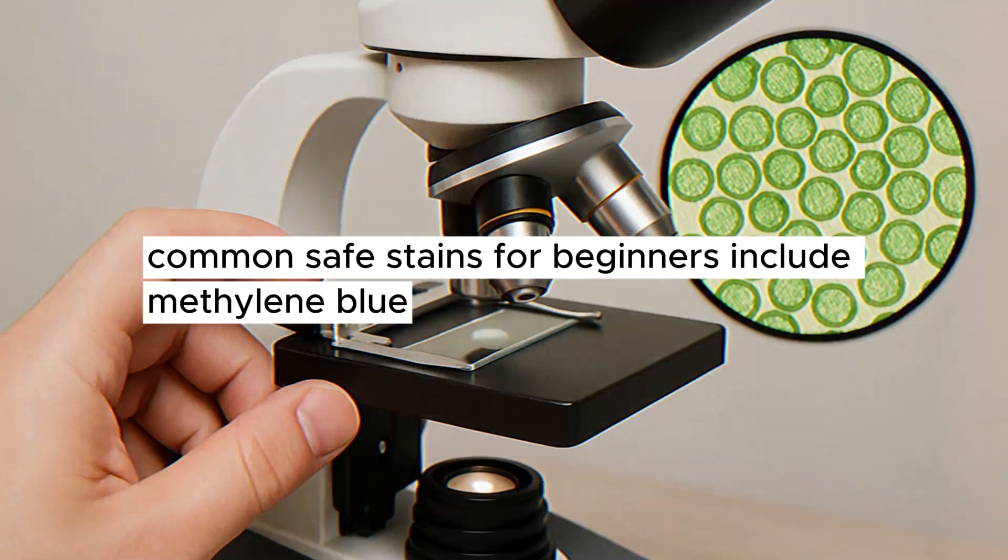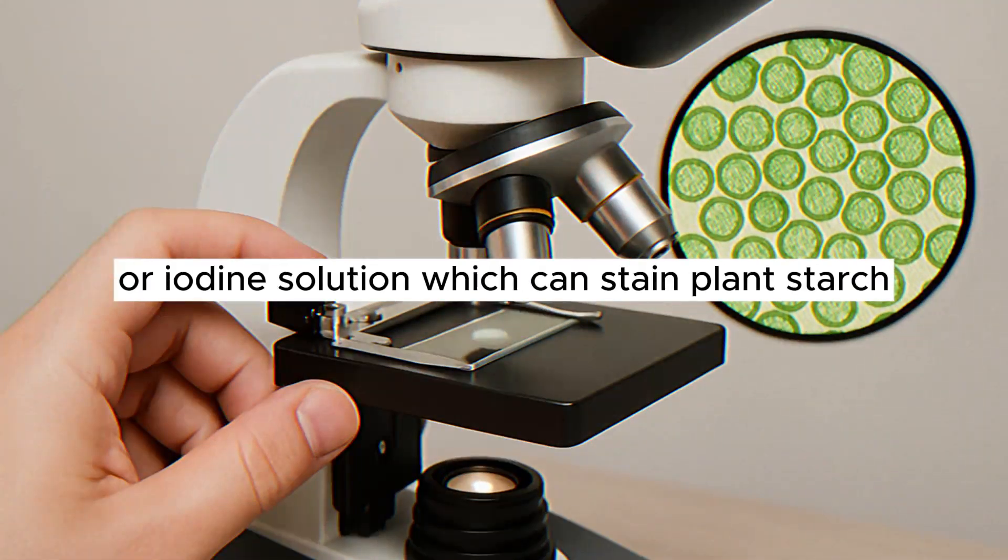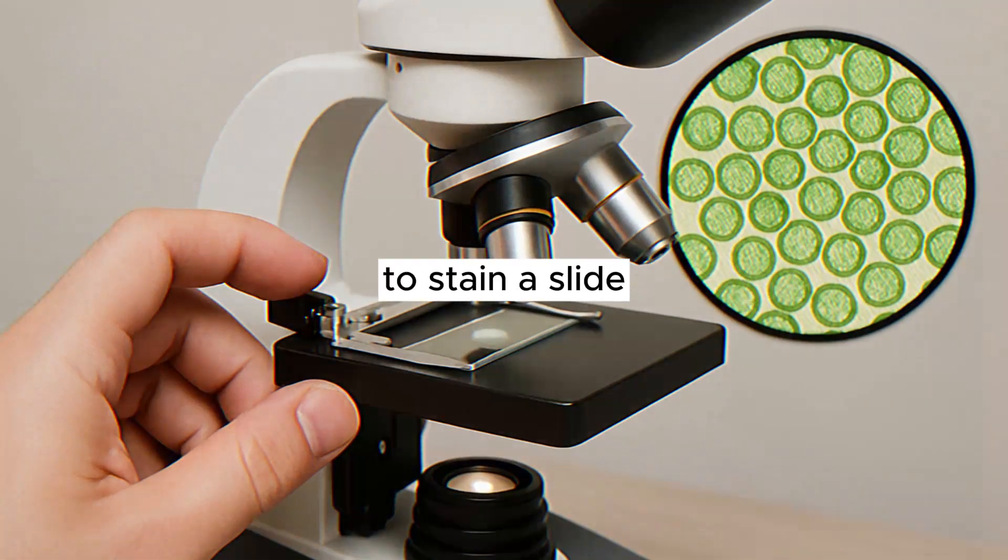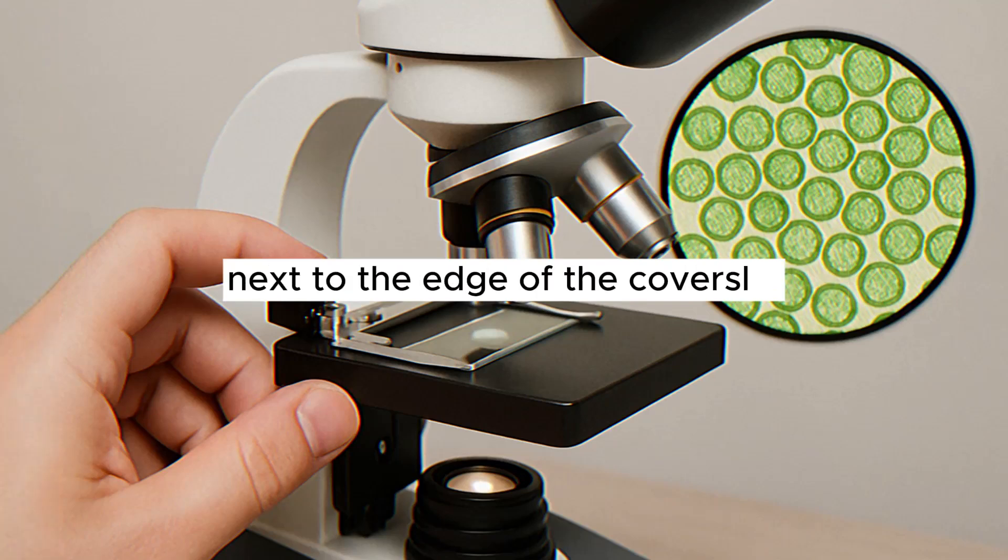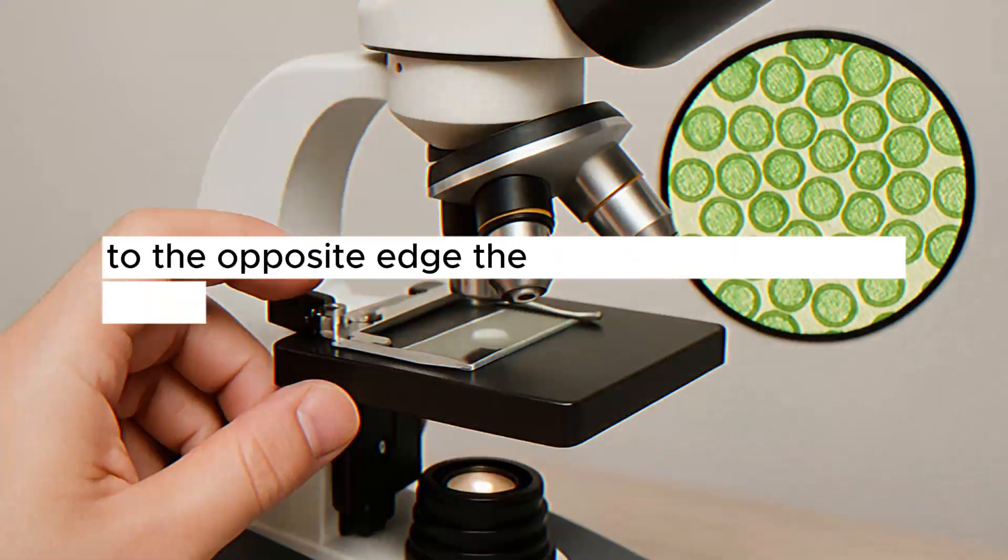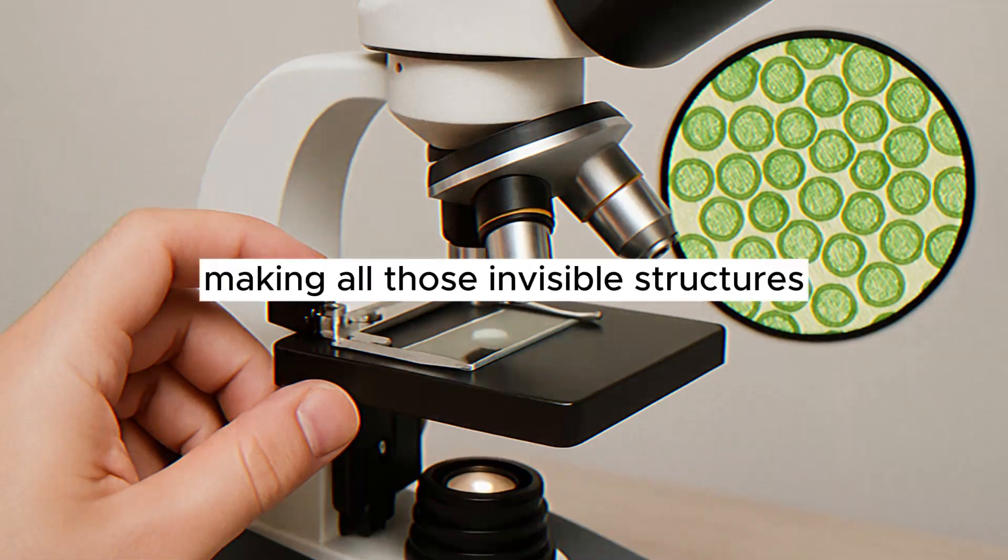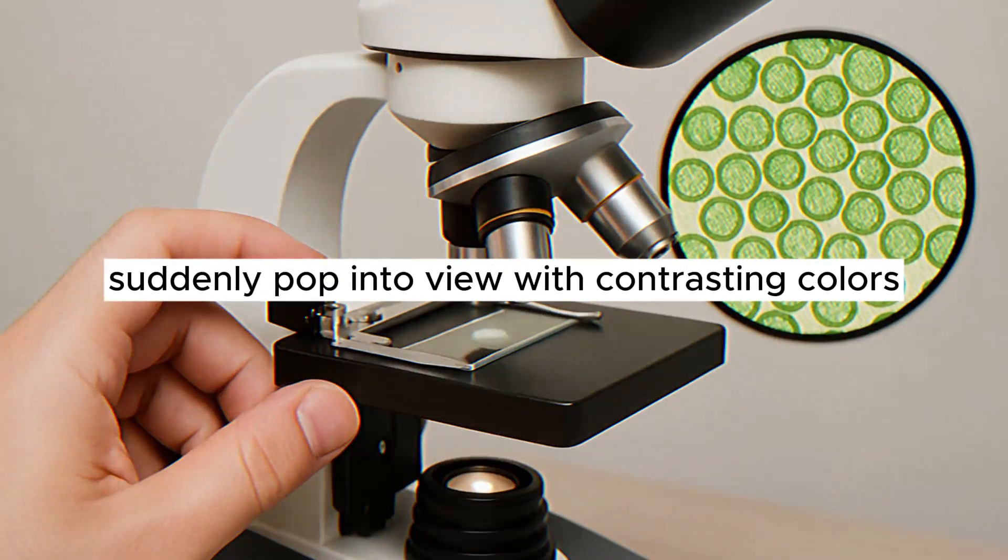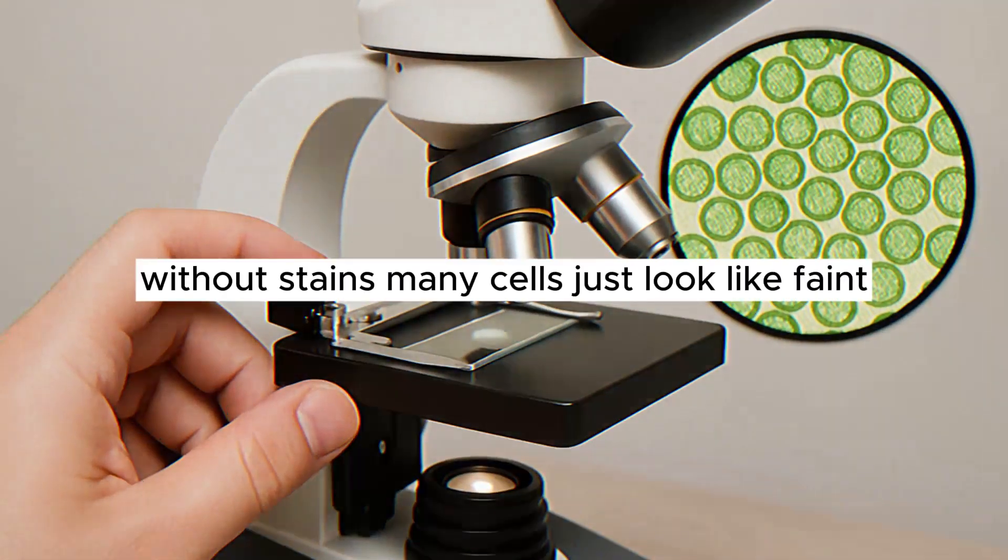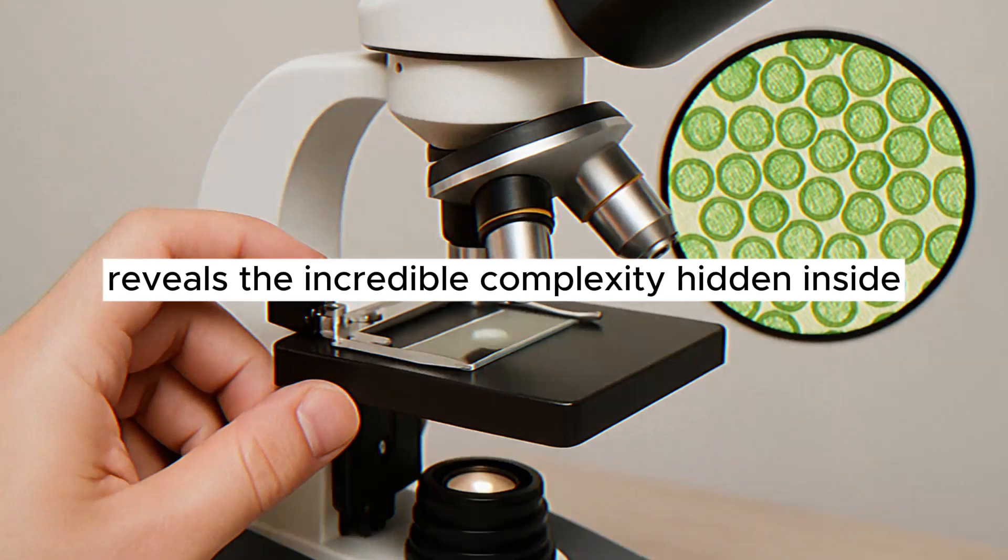Common, safe stains for beginners include methylene blue, which often makes the nucleus a dark blue, or iodine solution, which can stain plant starch or highlight structures in onion cells. To stain a slide, you often add a drop or two of the stain next to the edge of the cover slip, then carefully draw it under by touching a piece of paper towel to the opposite edge. The stain flows under the cover slip and colors the cells, making all those invisible structures suddenly pop into view with contrasting colors. It's like turning on the lights inside the cell. Without stains, many cells just look like faint, ghostly blobs or outlines. Staining reveals the incredible complexity hidden inside.